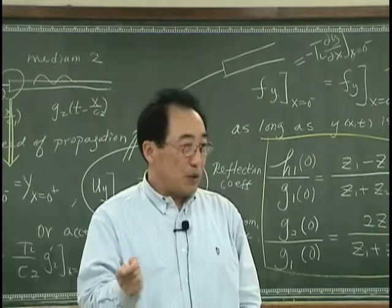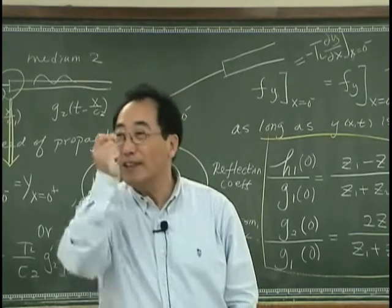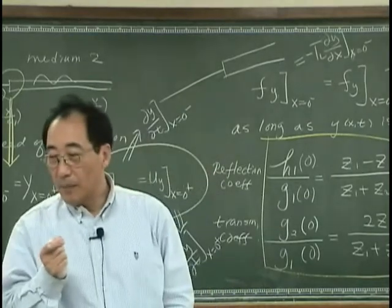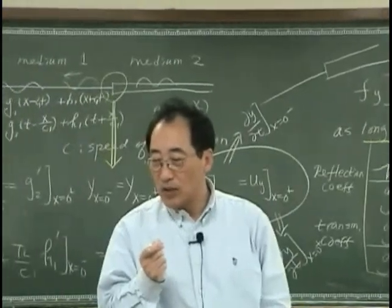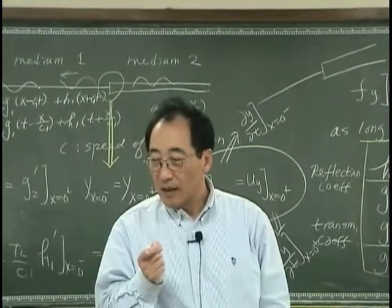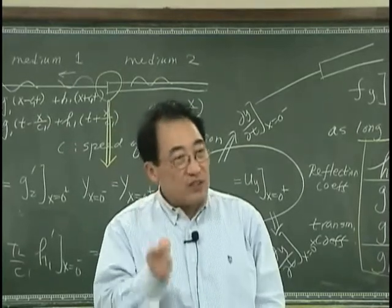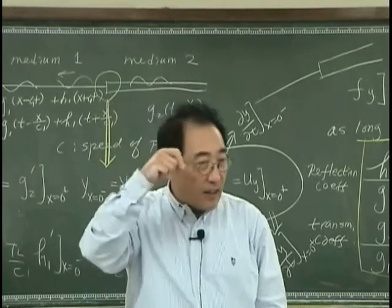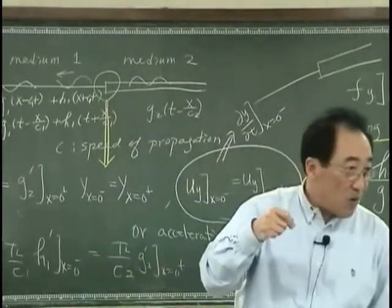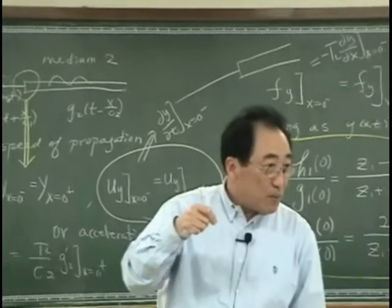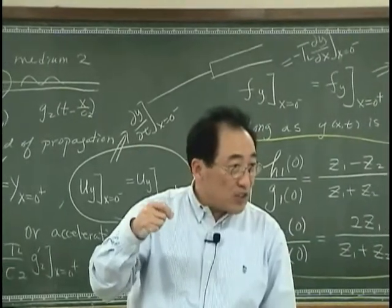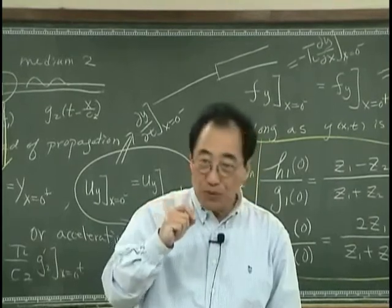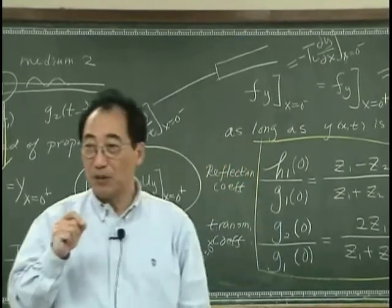What about the impedance at nodal point? An antinode. That means that antinode, we can move easily. Right? So, impedance should be getting smaller and smaller. Because U, velocity is getting to be large and large as you move from the nodal point.